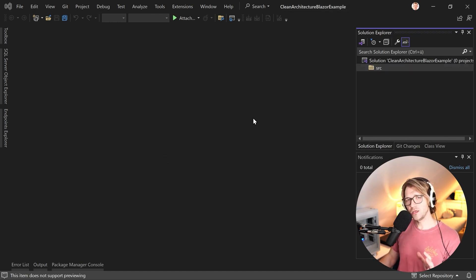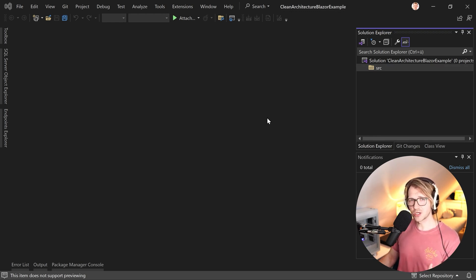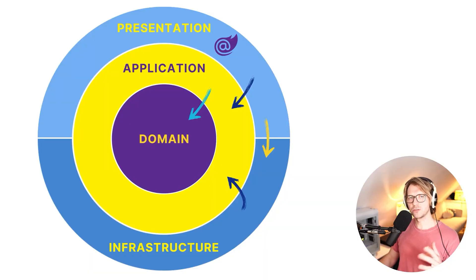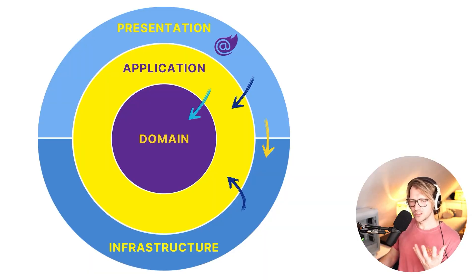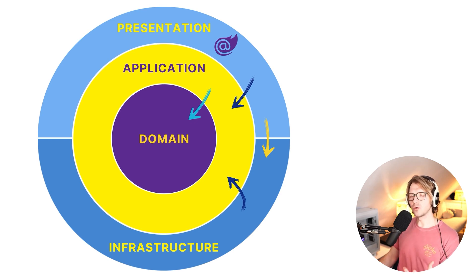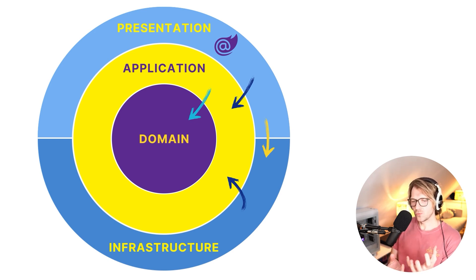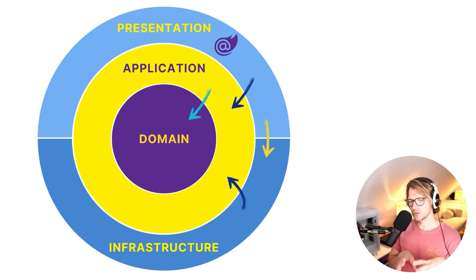After that we are ready to create our layers. But before we do that, let's have a look at the clean architecture image. I'm pretty sure you've already seen this. You see different layers: domain, application, presentation, and infrastructure. The domain is the core of the clean architecture - everything is drawn toward the domain.